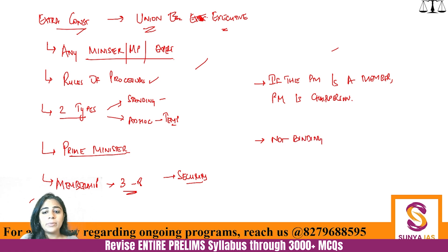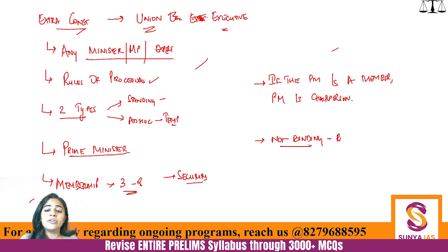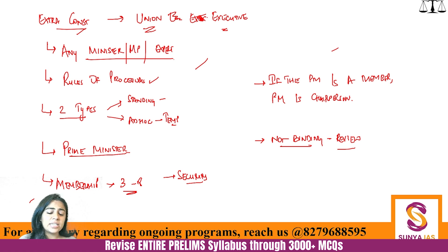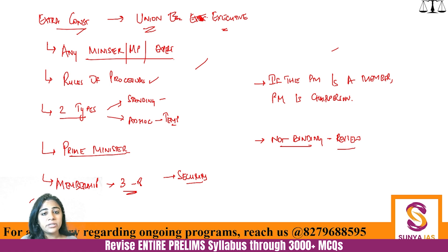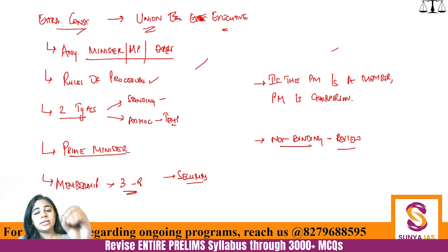The cabinet can review the decisions and suggestions given by the cabinet committees. This is different from judicial review — the judiciary cannot interfere in these matters. These kinds of committees are very top secret in the sense that they talk about very crucial issues, and the discussions they have cannot be made public. Cabinet reviewing the decision of a cabinet committee and the judiciary reviewing it are two very different things.